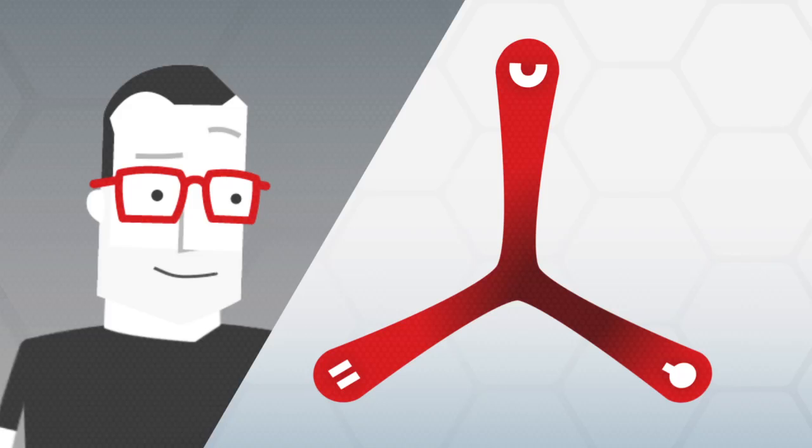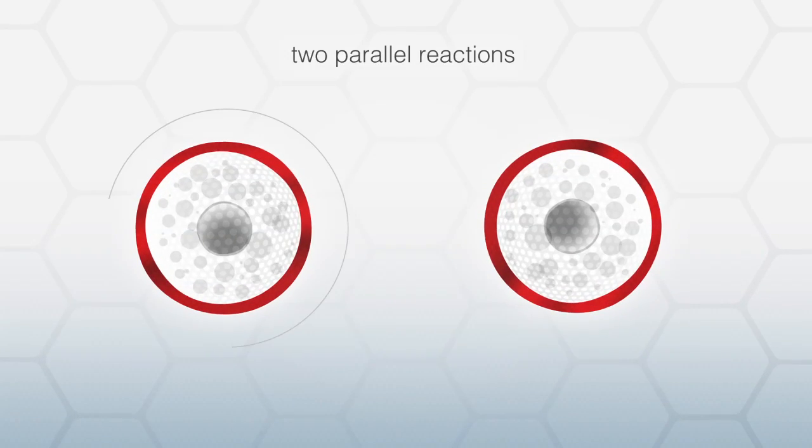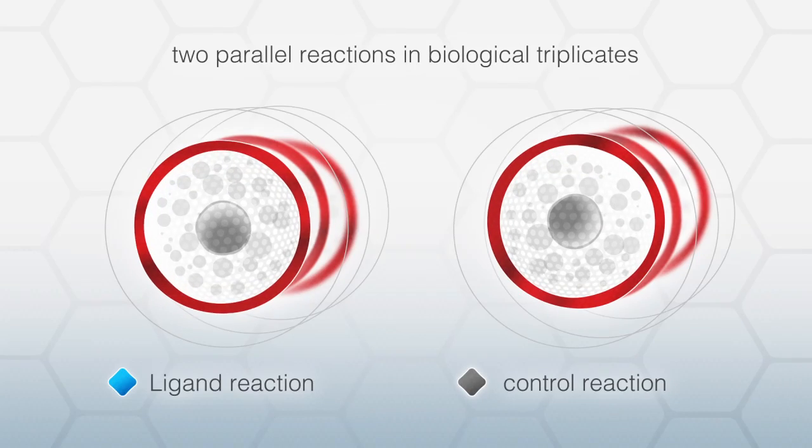Okay, let's look at it in a bit more detail. An LRC experiment works like this. We always run two parallel reactions, one with your orphan ligand and one with a control ligand.